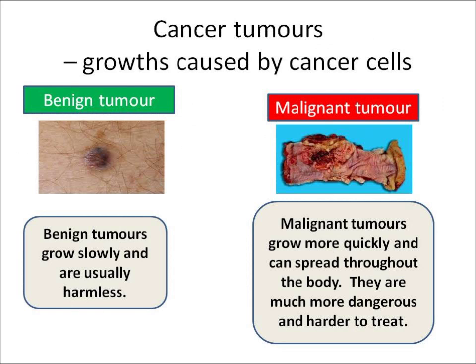You need to know a little bit more about cancer. Cancer tumours are growths caused by cancerous cells and there are two types of tumour. Benign tumours grow quite slowly and are usually harmless. More dangerous are malignant tumours — these grow more quickly and they can spread throughout the body causing secondary tumours. They are much more dangerous and they're harder to treat.